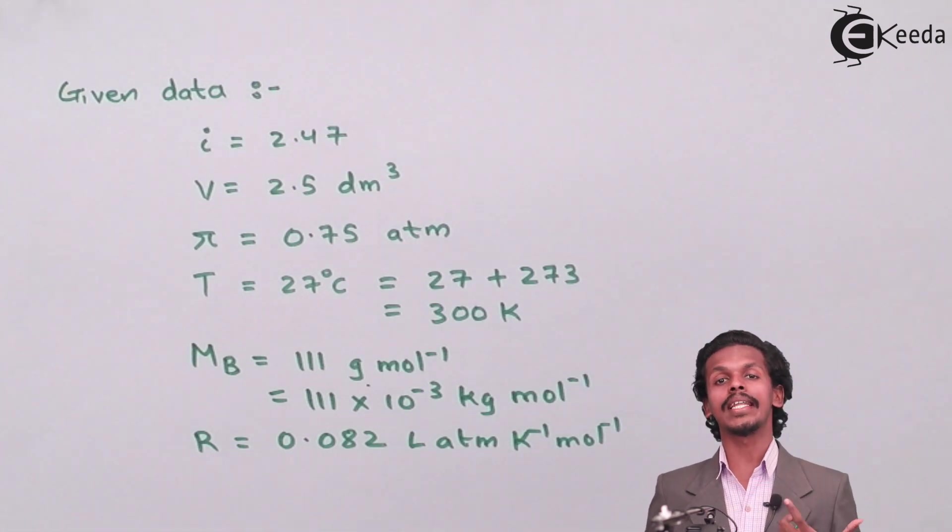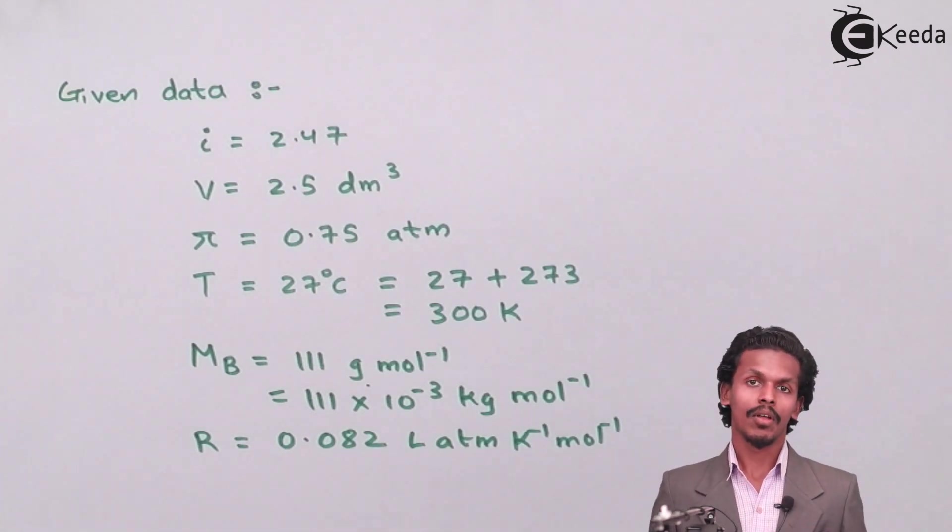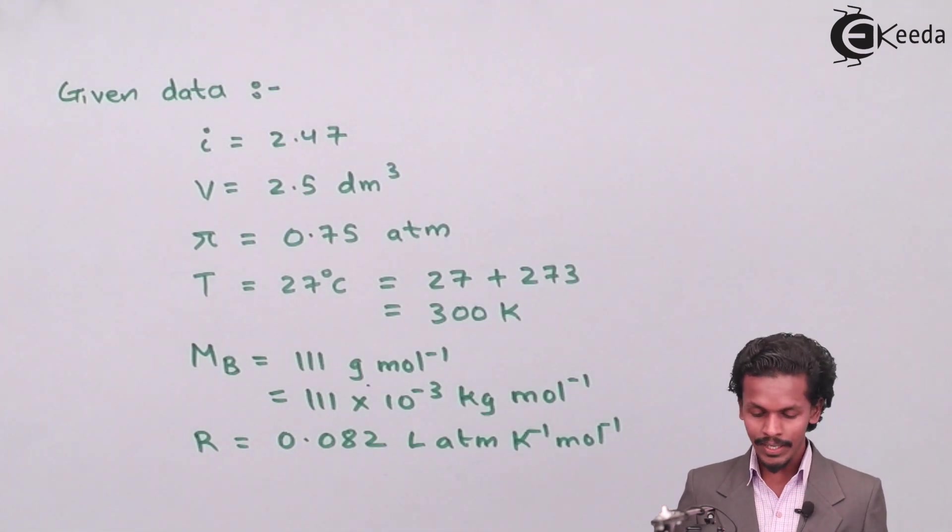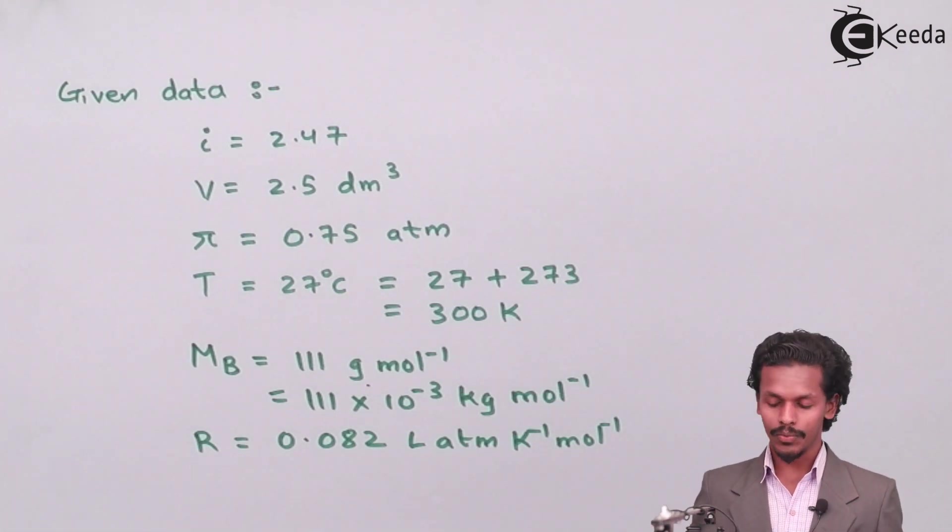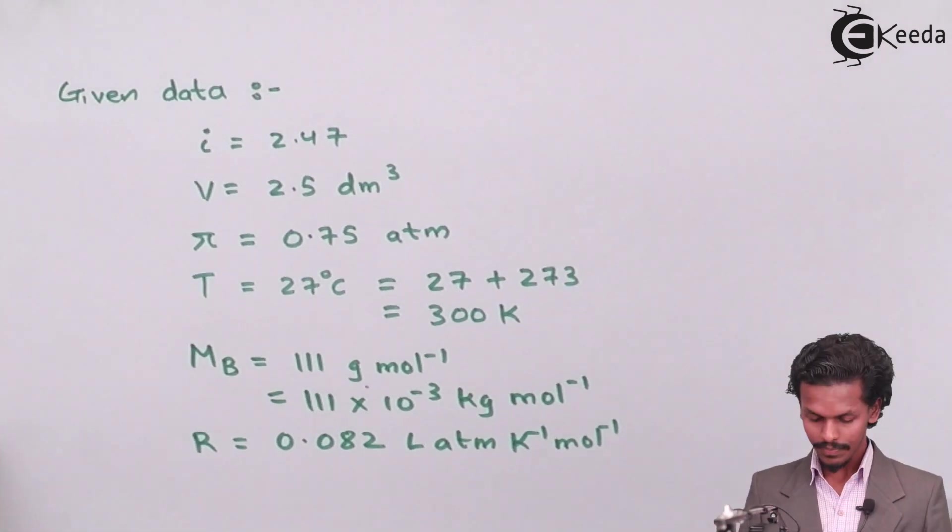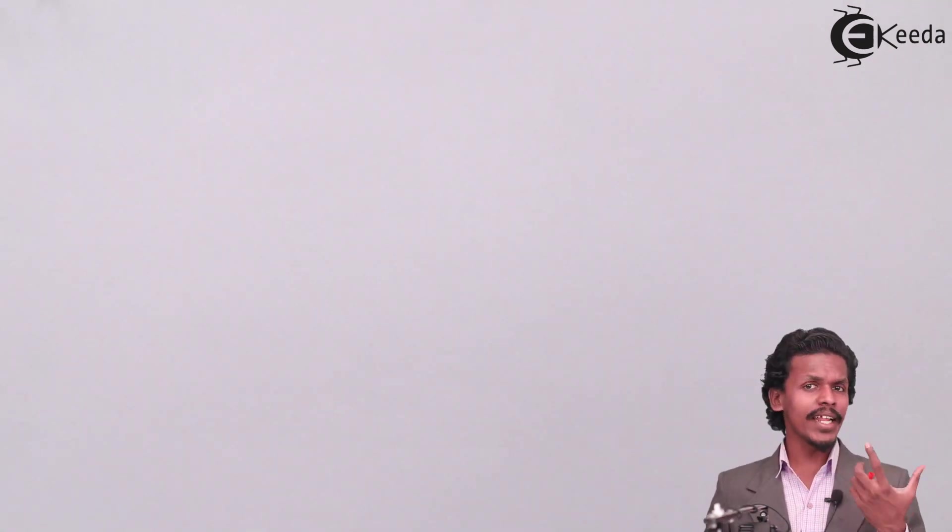And from this thing we have to calculate the number of moles or the mass of the CaCl2 which is present in the solution which have created a Van't Hoff factor of 2.47 and has created an osmotic pressure of 0.75. So let us find it out. So before finding out the requirement we should know that this problem is also based on osmotic pressure and moreover it has Van't Hoff factor in it also.